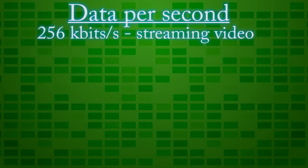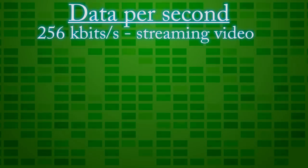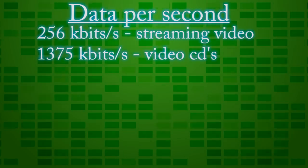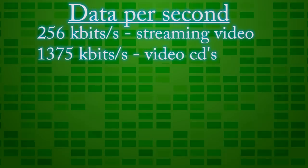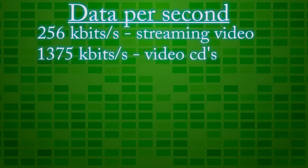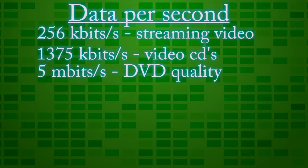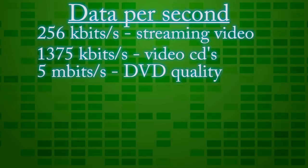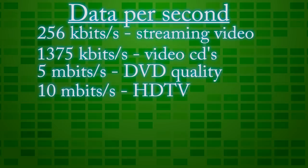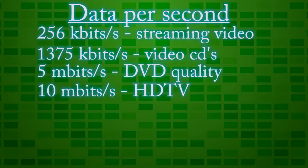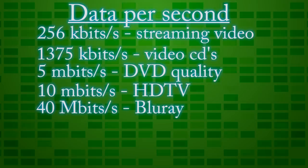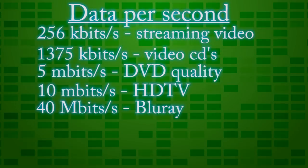256 kilobits per second is the bit rate for streaming videos and video conferencing. 1375 kilobits per second is around what's used for video CDs — it could be a little more or less. 5 megabits per second is considered DVD quality and is used in most DVDs. 10 megabits per second is for HDTV, and 40 megabits per second is the maximum for Blu-ray videos.